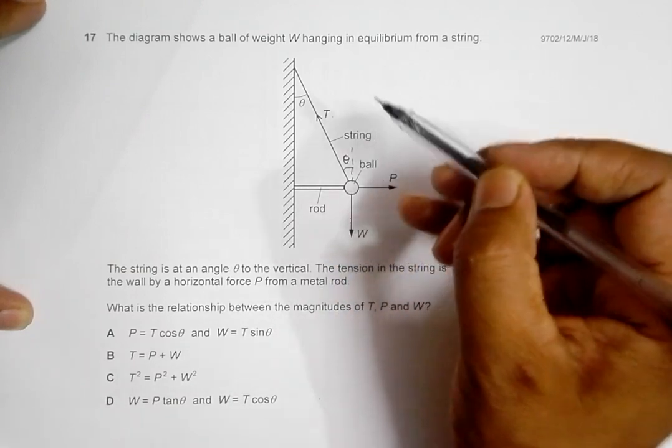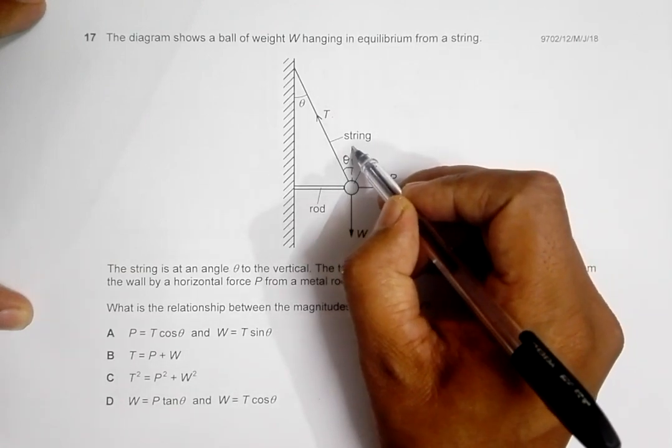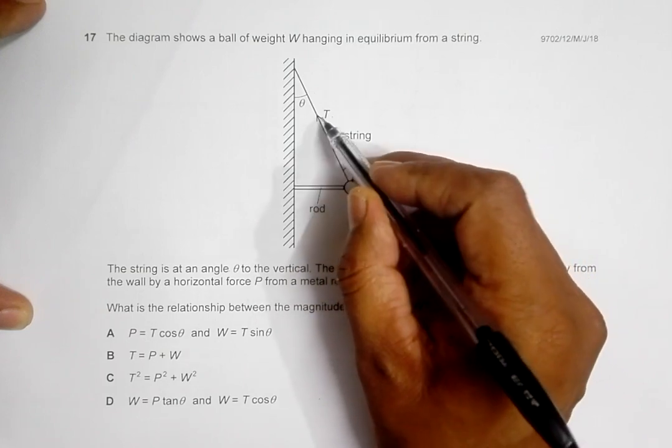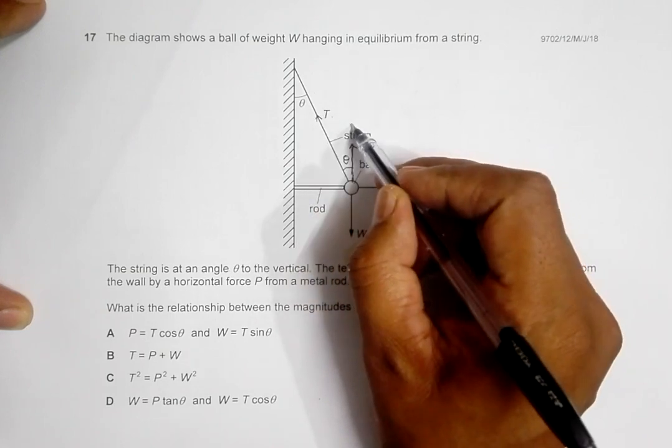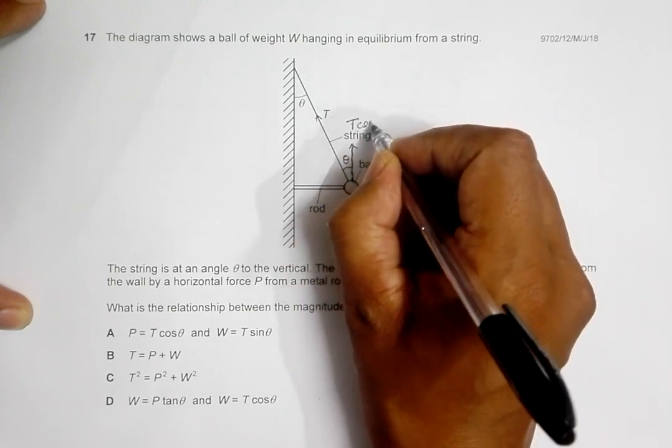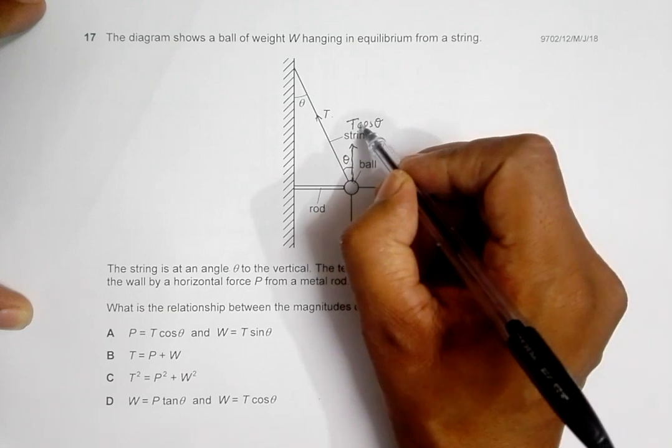Let's go for the vertical force. The vertical force in this direction will be equal to the component of this T in this direction. That's equal to T cos theta, since theta is here.